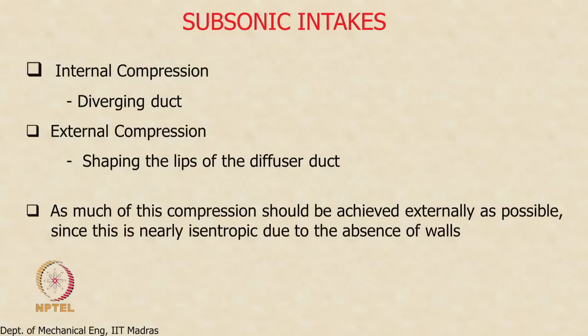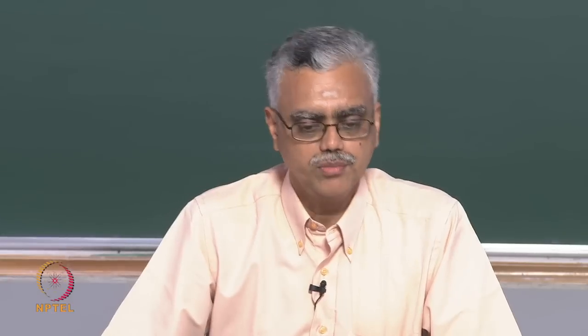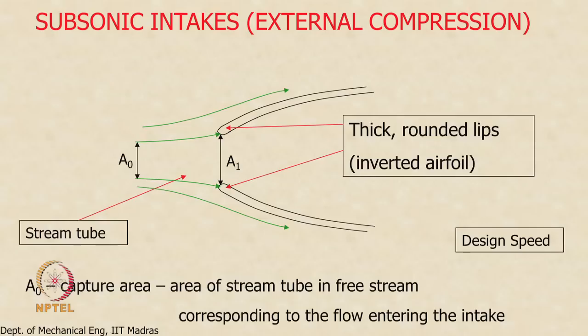External compression is achieved by shaping the lips of the diffuser duct, adjusting them so the free stream tube is compressed before entering. External compression is highly desirable because it is very close to being isentropic — there are no surfaces, no friction losses, no irreversibilities. The lips of the diffuser duct have a thick rounded shape, almost like an inverted airfoil, causing the flow to approach with a smaller free stream captured area compared to the intake entry area.